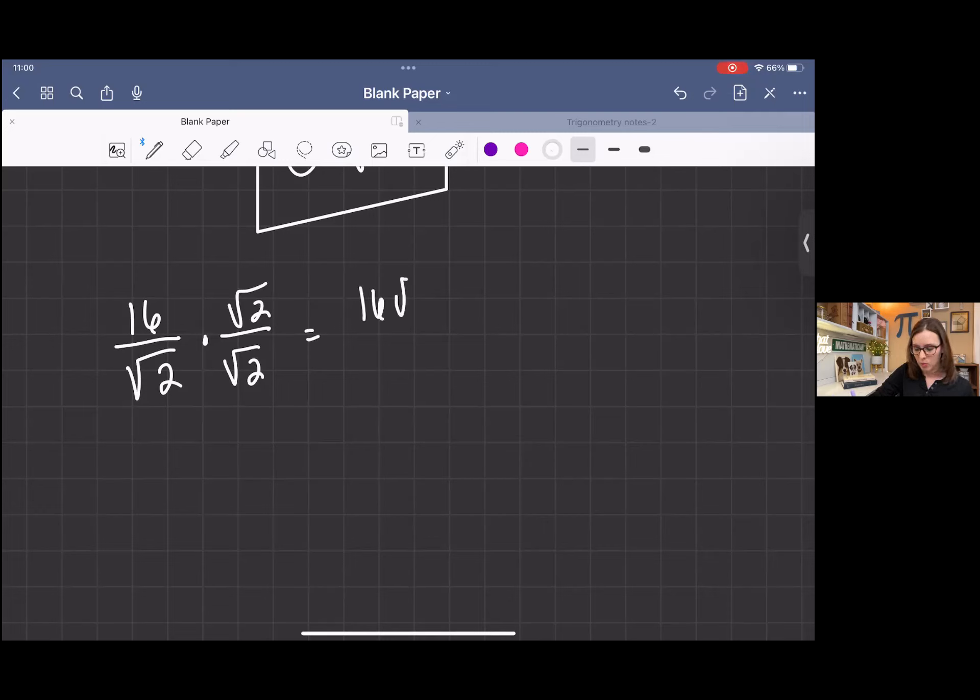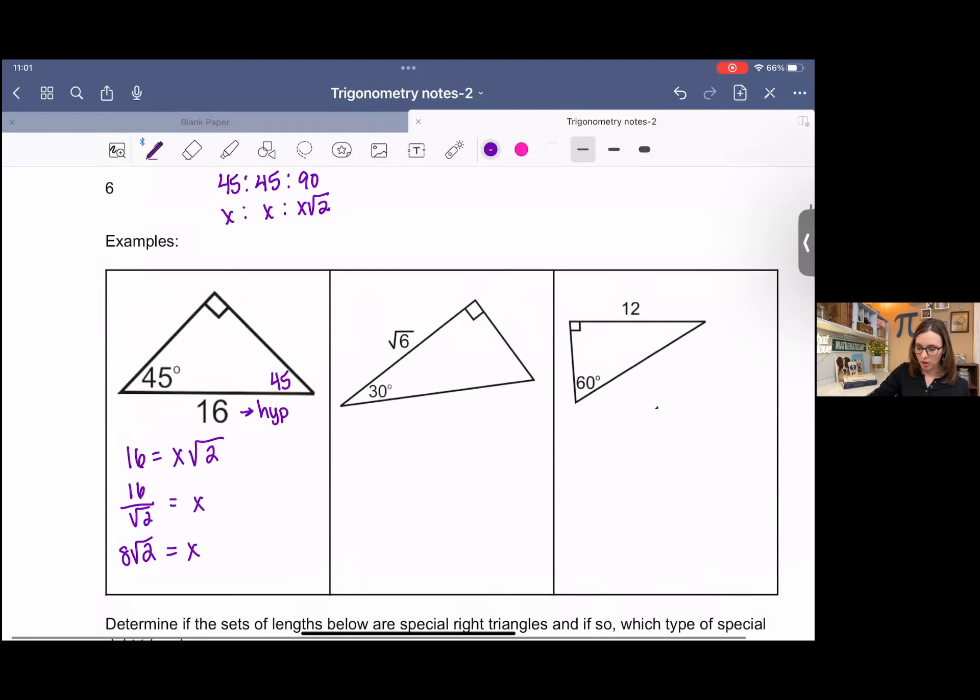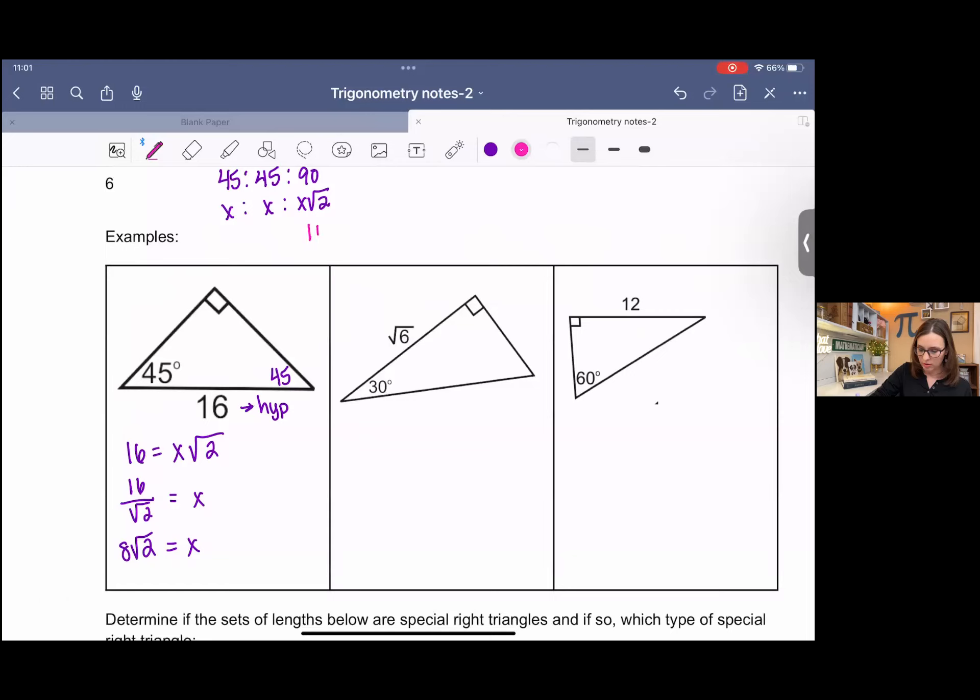We've got 16 over root 2. Now to rationalize a denominator, in this case, all we have to do is multiply by what's ever in the denominator on the top and bottom. So that means I have 16 square root 2 over square root 4. Simplify. Square root 4 is 2. And then I'm going to reduce the outsides. 16 over 2 is 8. So completely simplified, x is 8 square root 2. Now, this is kind of nice because based on my ratio, I was given this side and I needed to find these sides and those sides are equal to x. So I've done it.